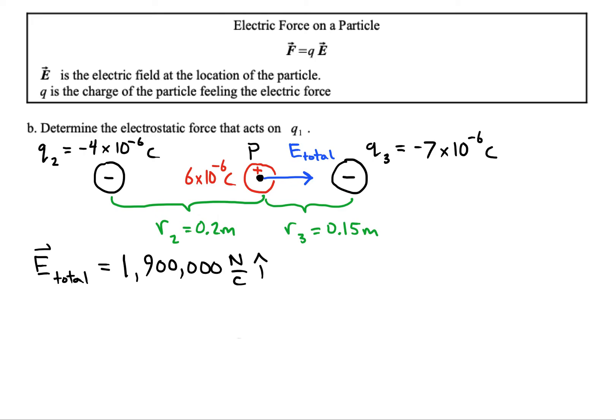We want to figure out how much force is that positive charge gonna feel because it's in the field. And there's an easy formula to find this. The formula is that the electric force acting on our particle will be the product of its charge times the field that it's in.